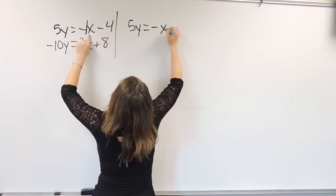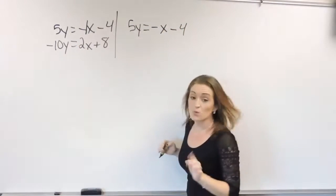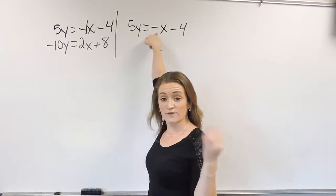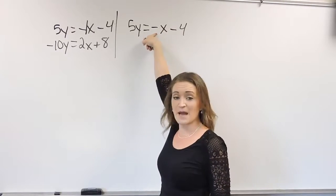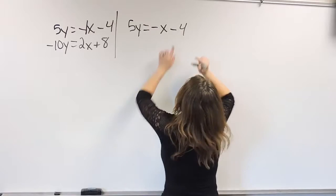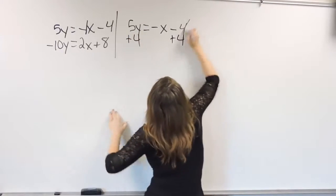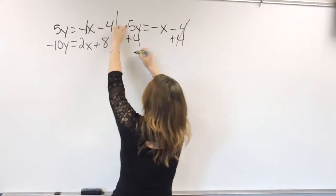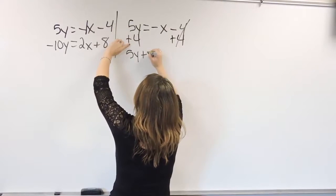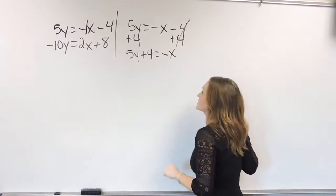So I'm just going to pull this equation out over here. And what I want to do is I want to get this solved for x. So get the x completely by itself. So by doing that, I need to add 4 to both sides first. Negative 4 plus 4 cancels, and I get 5y plus 4 is equal to negative x.